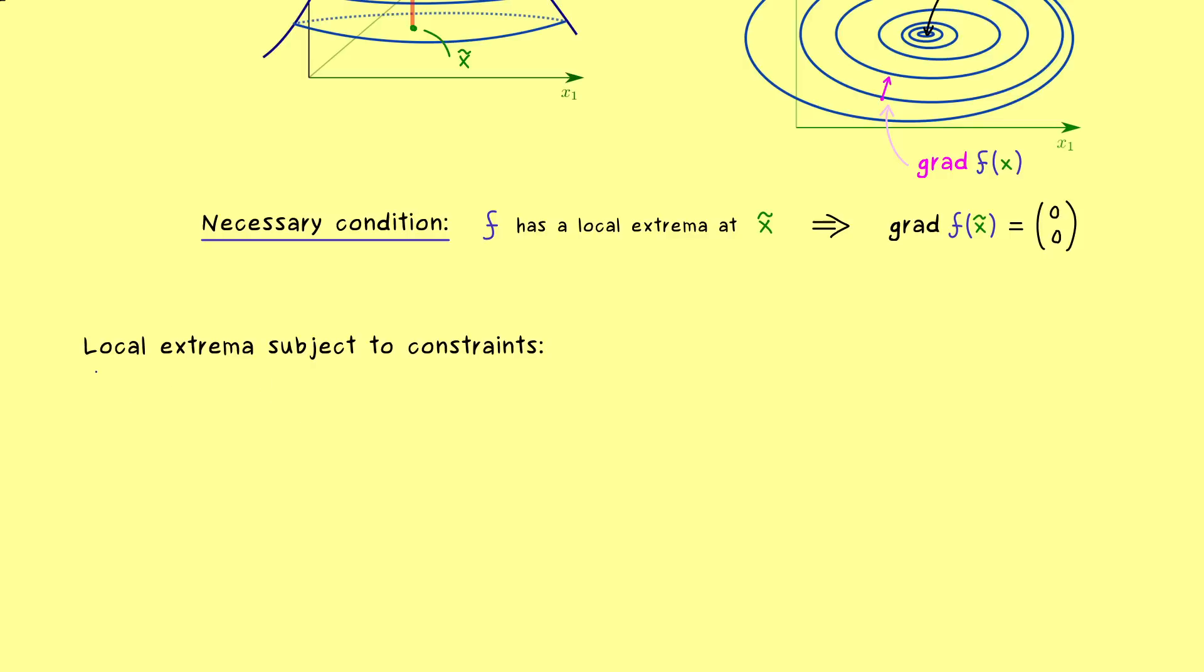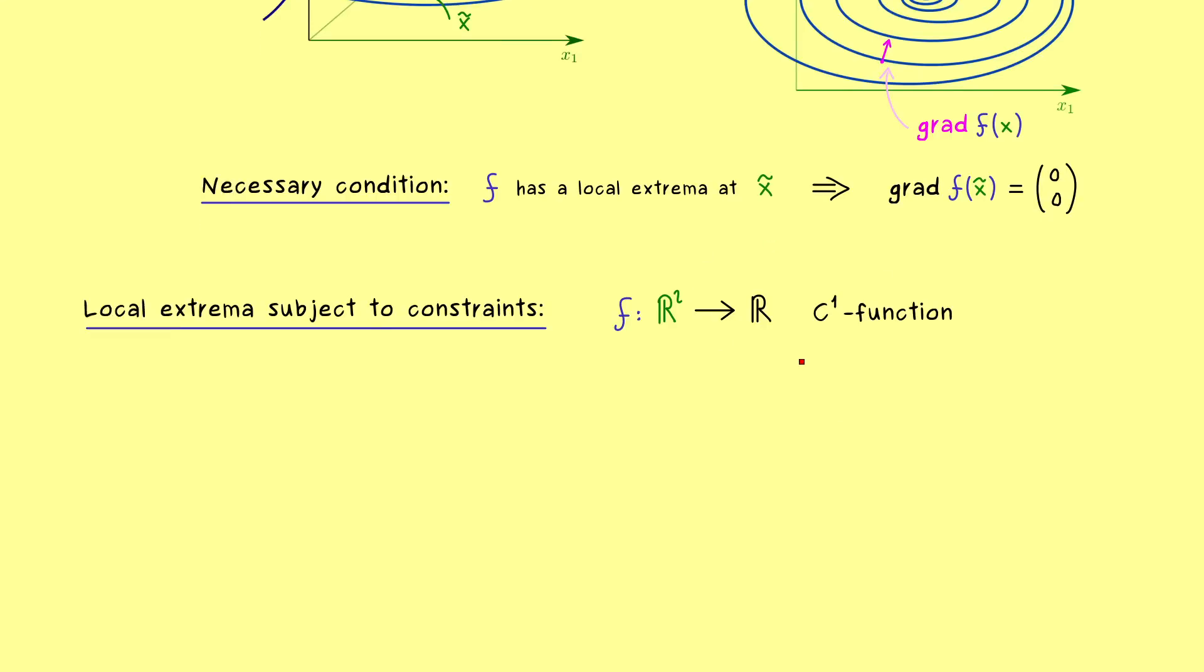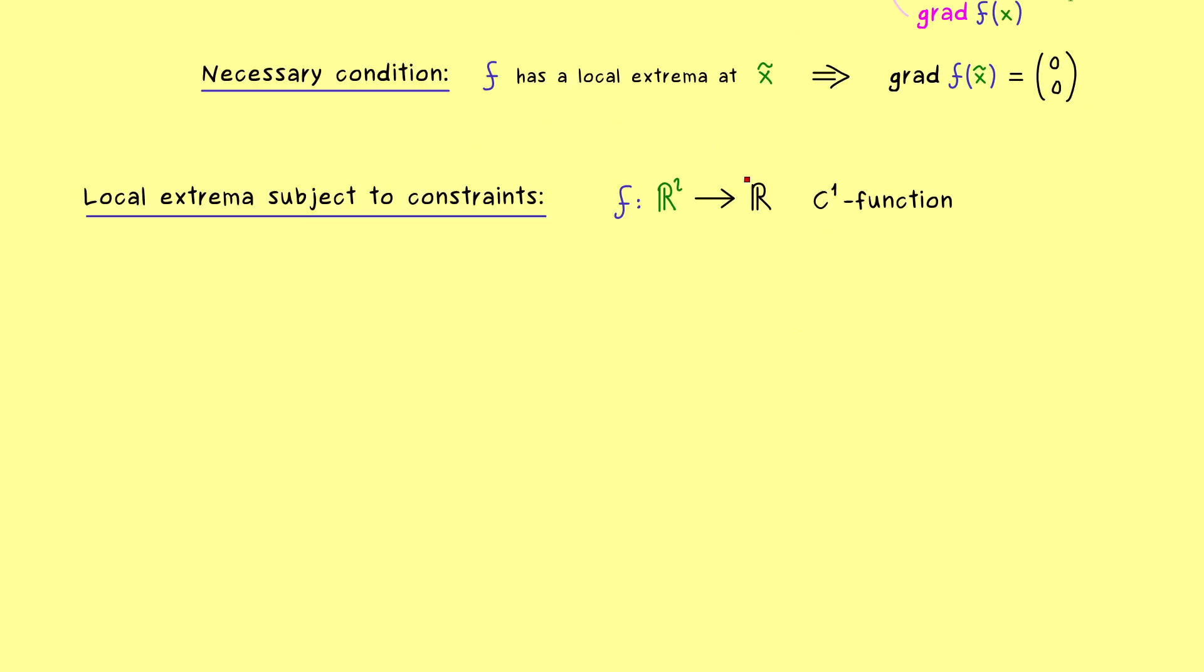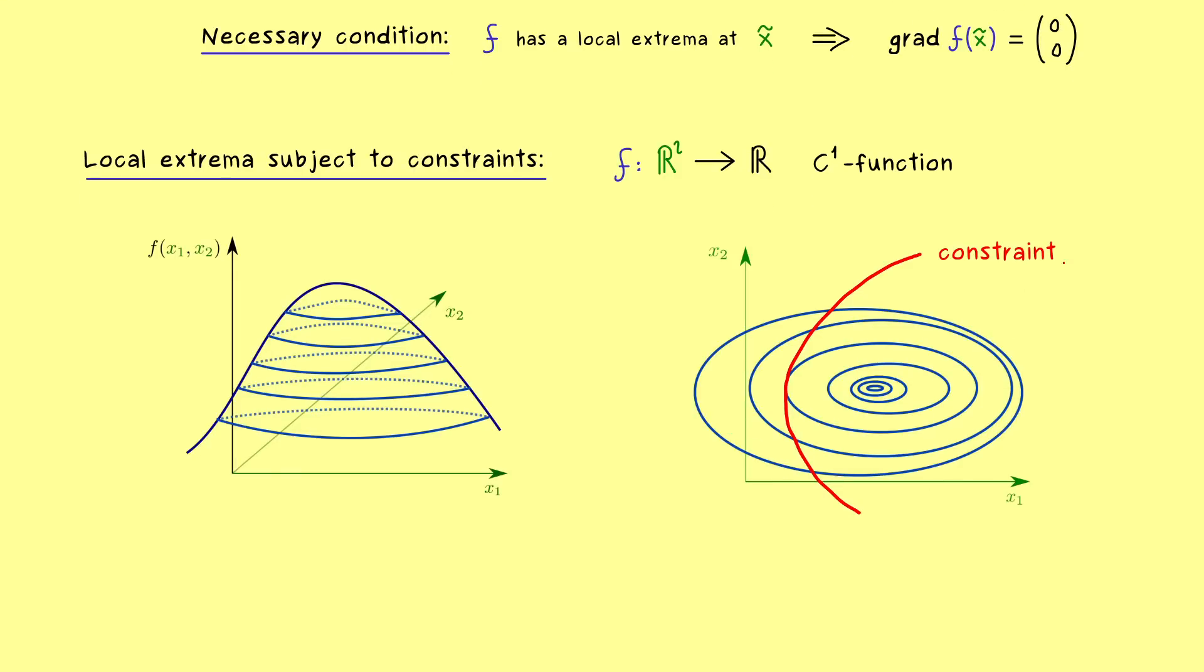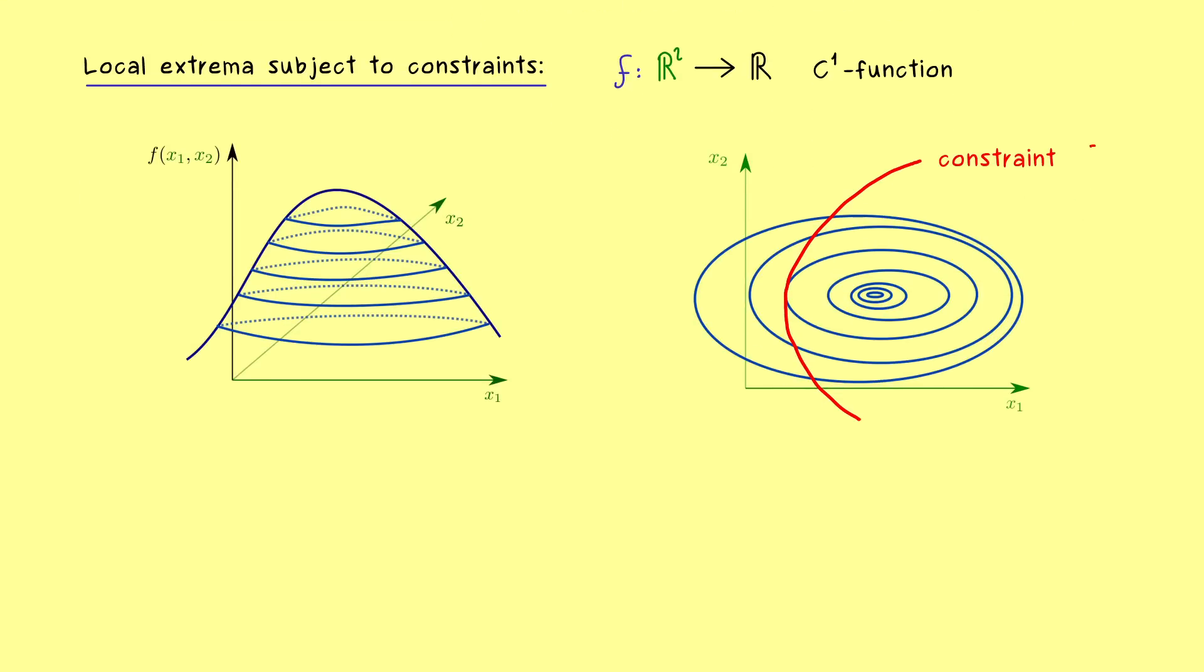So let's talk about local extrema subject to given constraints. And to keep it simple, we still just consider C¹ functions defined on R². So we still have the advantage that we can visualize everything easily. So I would say, let's first look at the contour lines on the right again. So there we have the whole domain of f given as R². But now we want to restrict it to this curve. In other words, this is our given constraint. And let's call this set capital G.